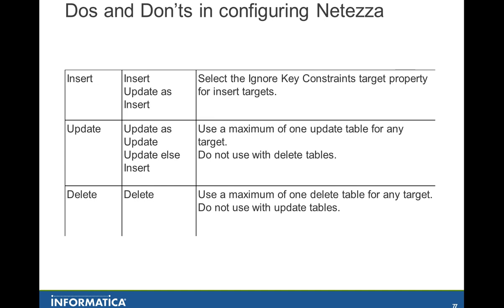Here is what can be done. When you do an insert, select 'insert' or 'update as insert' in the session property and also select 'ignore key constraint' for the insert target. When you have an update, you can select 'update as update' or 'update else insert.' You can use a maximum of one update for any target along with one insert. In the case of SCD2 and SCD1 together in a mapping, you will have one insert and update for the SCD2 implementation and another update for SCD1 — which is exactly the scenario prone to failures. There is a property that can be set to override this, but it has limitations, which we will address shortly.